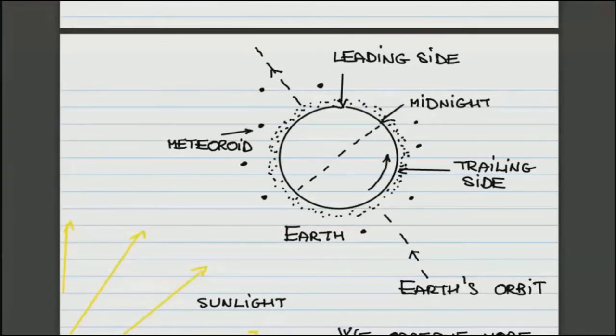It will scoop up the meteoroids in front of them than the trailing side. So after midnight, one is on the leading edge of the Earth, sort of facing the direction in which it is moving. And therefore, it is more likely that one of these meteoroids will enter the atmosphere and start burning.